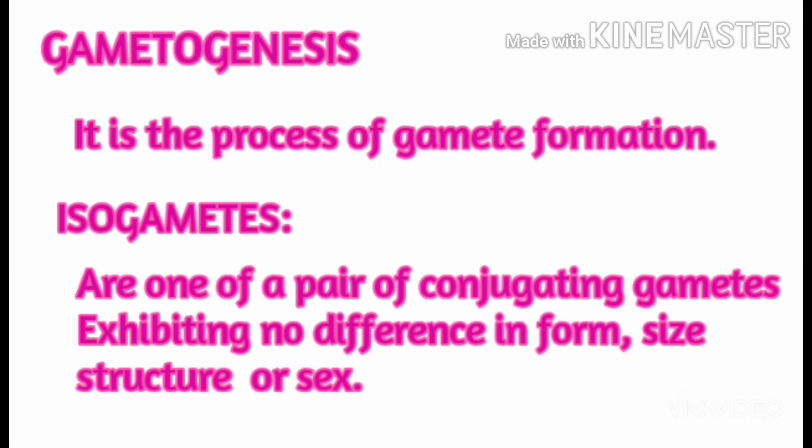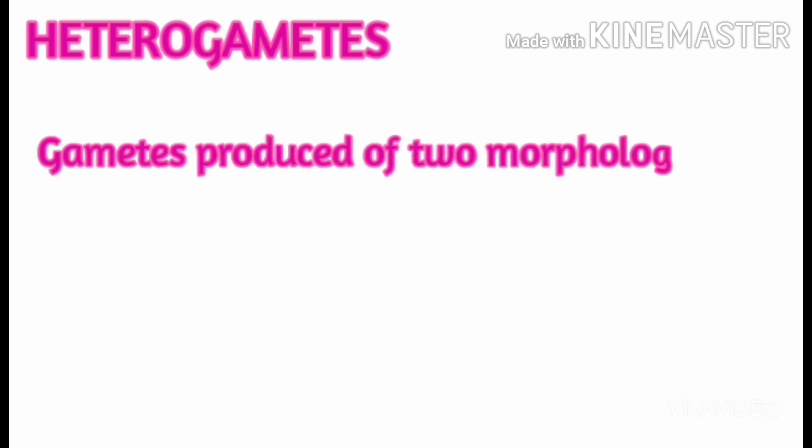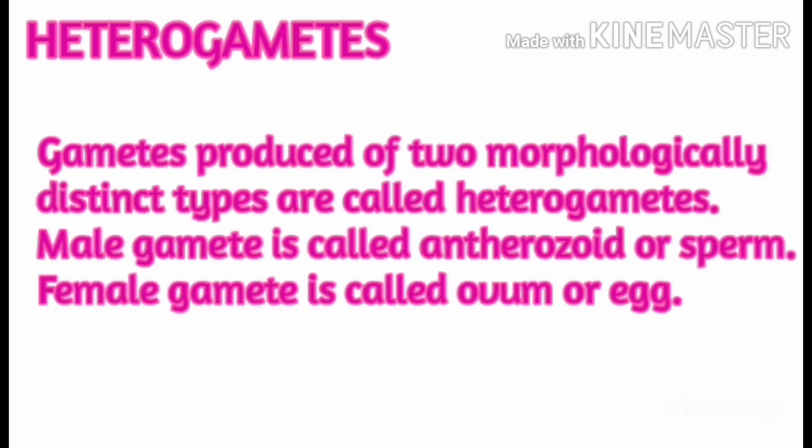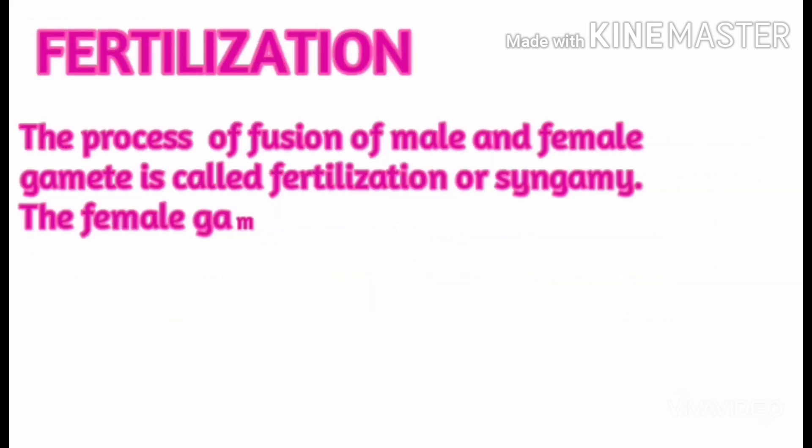Isogametes are one of a pair of conjugating gametes exhibiting no difference in form, size, structure, or sex. Heterogametes are gametes produced in two morphologically distinct types. The male gamete is called antherozoid or sperm, and the female gamete is called ovum or egg.